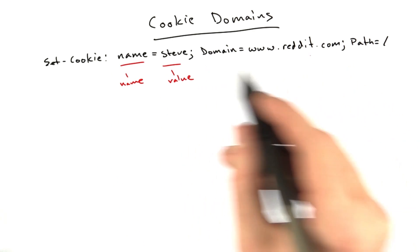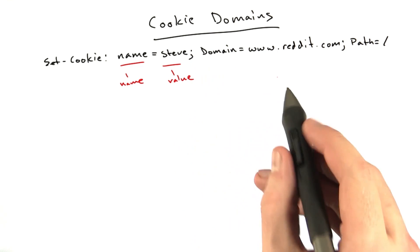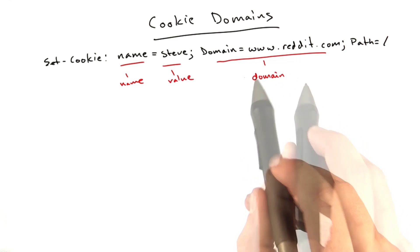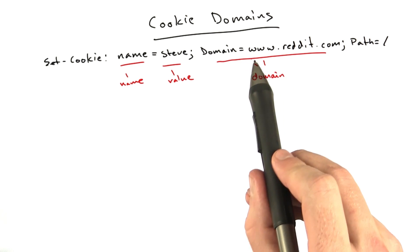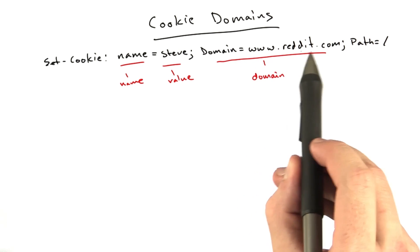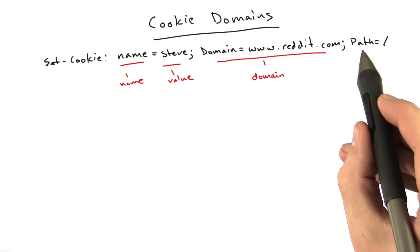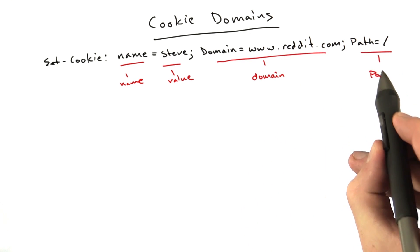And now we've added a couple extra parameters. We've got a semicolon to end the value. We've added this domain parameter, and this is what domain this cookie is relevant to. In this case, it is relevant to www.reddit.com.